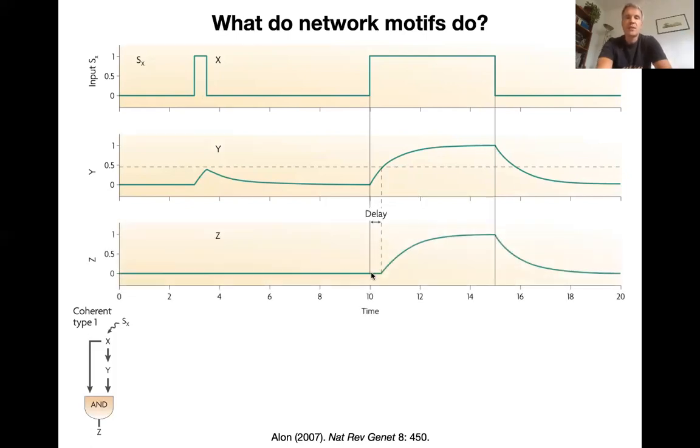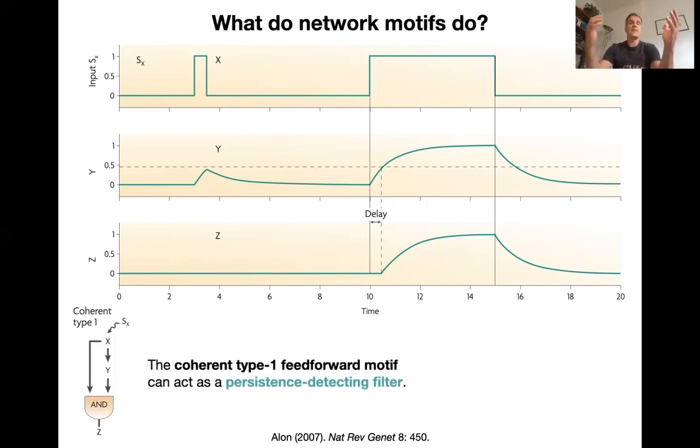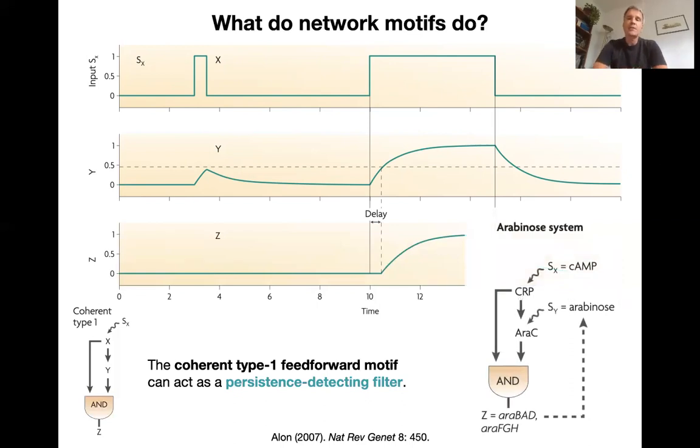So here's the output of Z and you can see that it only reacts. It only responds to the sustained pulse while filtering out short pulses. So this motive can act as a persistence detecting filter. It will filter out noise, brief signals that the organism doesn't need to detect. And indeed there are systems like the Arabinose metabolizing system in E. coli that work like this. And you can experimentally show that the principles that this simple toy model implements, that they apply to the processing of Arabinose, induction of Arabinose processing in E. coli.